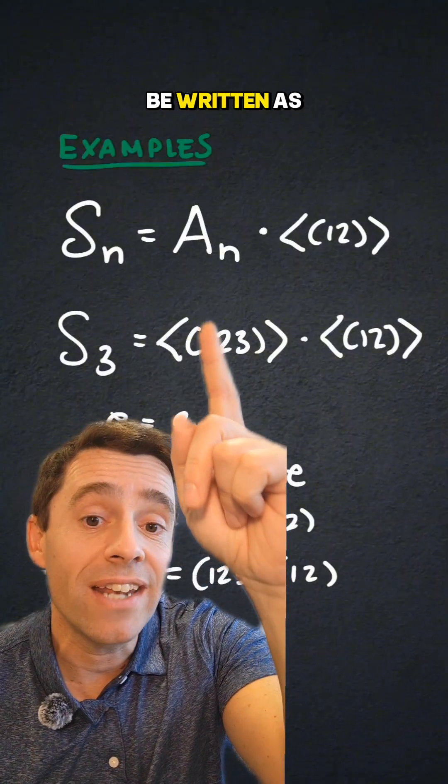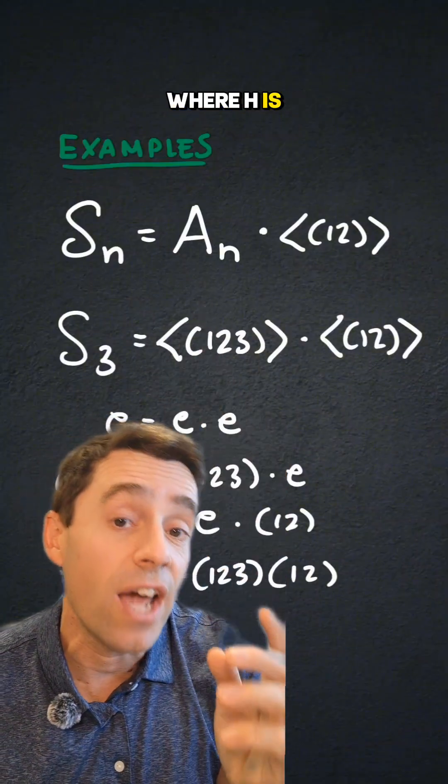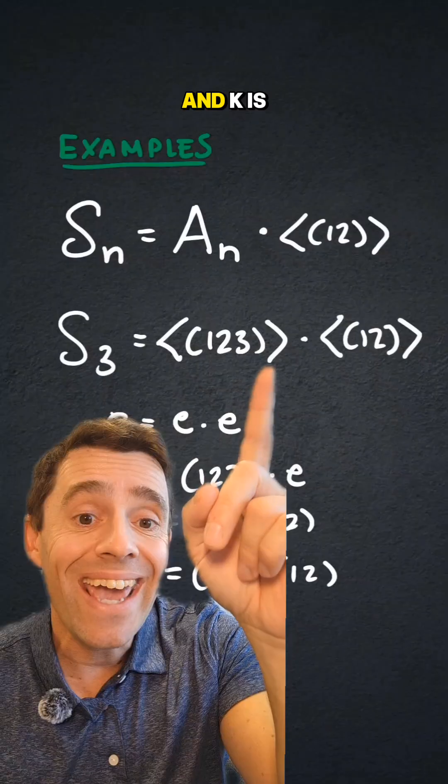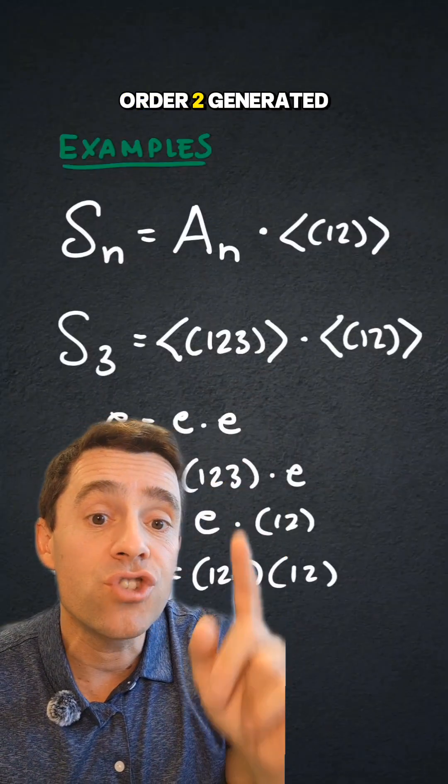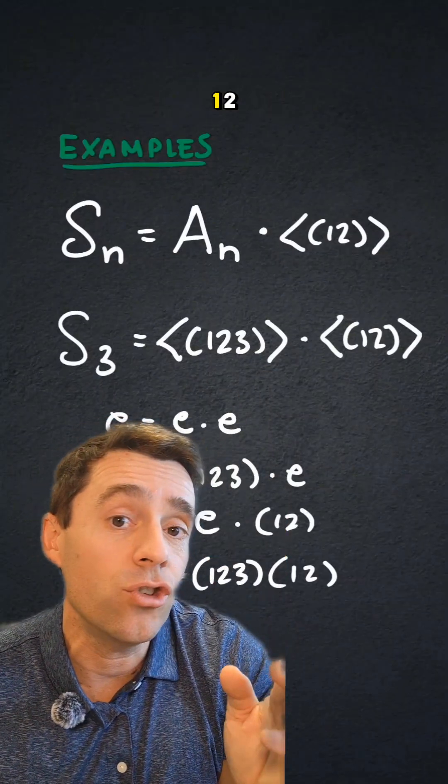So for example, sn can be written as h times k, where h is the alternating subgroup, and k is the group of order two generated by that transposition one, two.